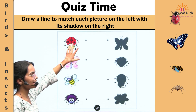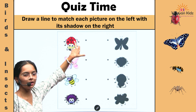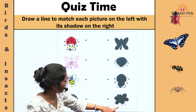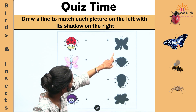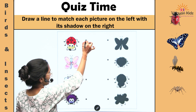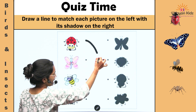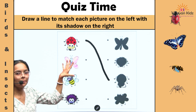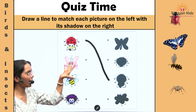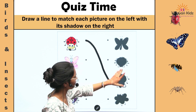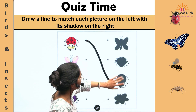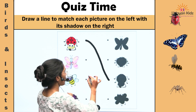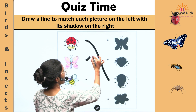This is ladybug. Now let's find the ladybug shadow. Yes, this is ladybug. Next one is butterfly. Let's find the shadow of butterfly. This is butterfly shadow. Let's match.